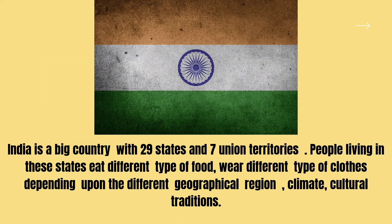India is a big country with 29 states and 7 union territories. People living in these states eat different types of food, wear different types of clothes, depending upon the different geographical region, climate, and cultural traditions.